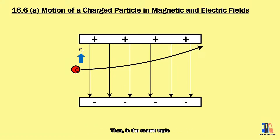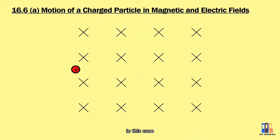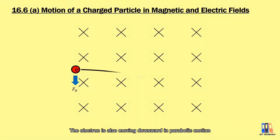Then in the recent topic, we also learned how electrons behave in a magnetic field. In this case, we can apply Fleming's left-hand rule to determine the direction of the magnetic force, which will be a downward force in this case. So the electron also moves downward in a parabolic motion.